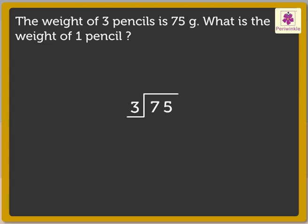Step 1. Comparing the digits. We start with the digit in the tens place. That is, 7. Here, 7 is greater than 3. So, we can divide 7 by 3.